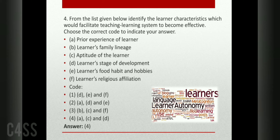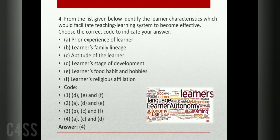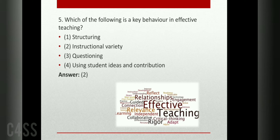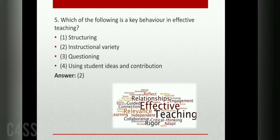Which of the following is the key behavior in effective teaching? Answer: instructional variety. Effective teaching strives to motivate and engage all students in learning, thus giving them variety of learning as instructional objectives. A teacher can enhance behavior changes in students through this approach.